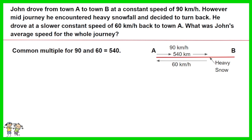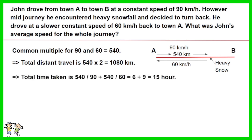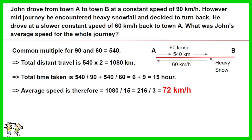For ease of understanding, we plotted the data in the diagram on the right. You will find that the total distance traveled by John is 540 times 2, which is 1080 km. The time taken by John for the entire journey is 540 divided by 90 km per hour toward Town B, and 540 divided by 60 km per hour back to Town A. The total duration is 15 hours. Average speed is therefore 1080 km divided by 15 hours, which gives 72 km per hour.